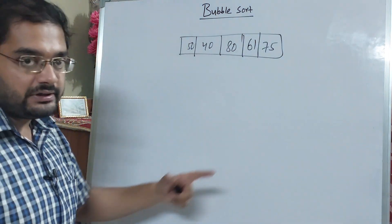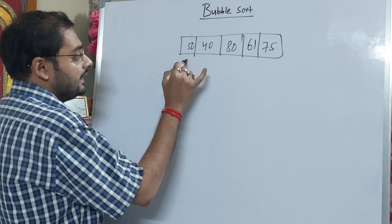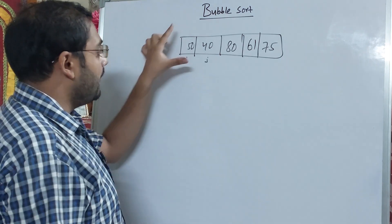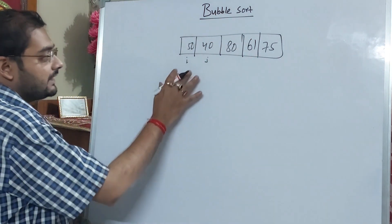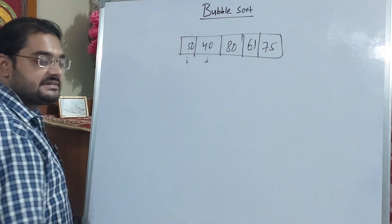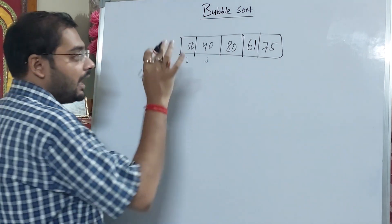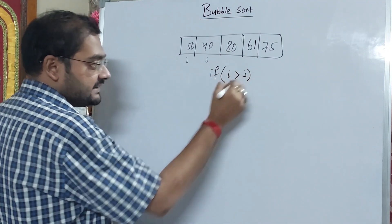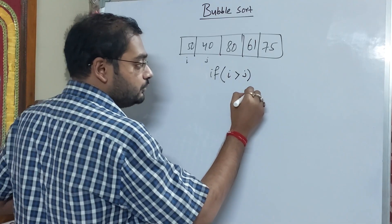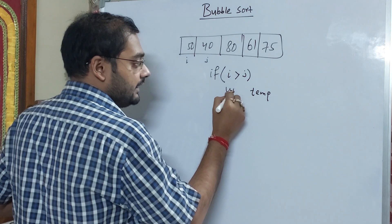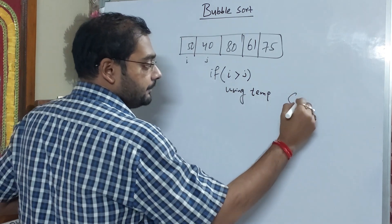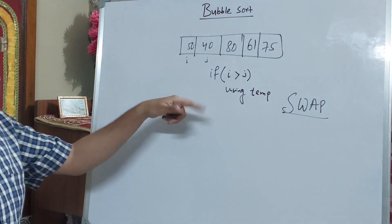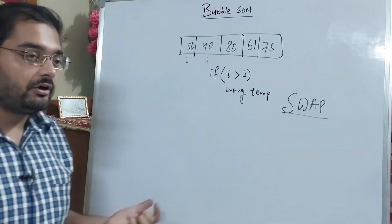First of all, in the bubble sort technique, there is some procedure. Number one: these numbers belong to I and J. These are the number of elements. First, I will denote I and J. If I is greater than J, we can do this procedure.